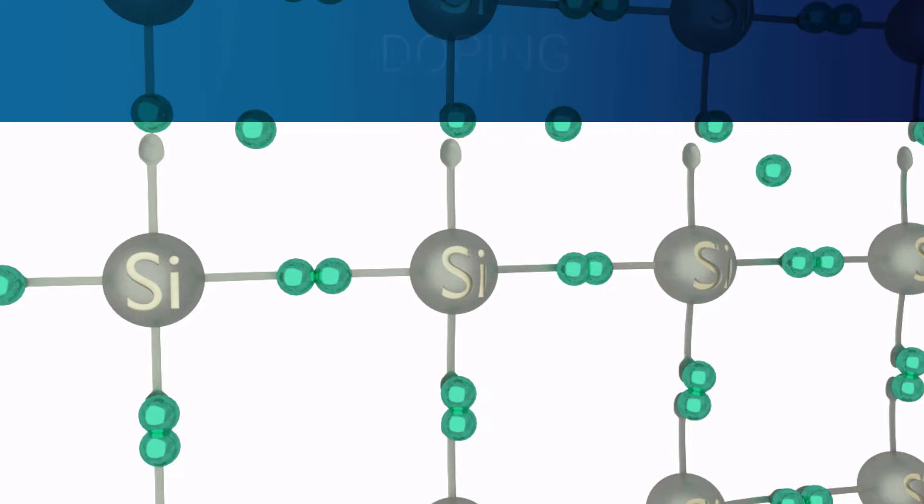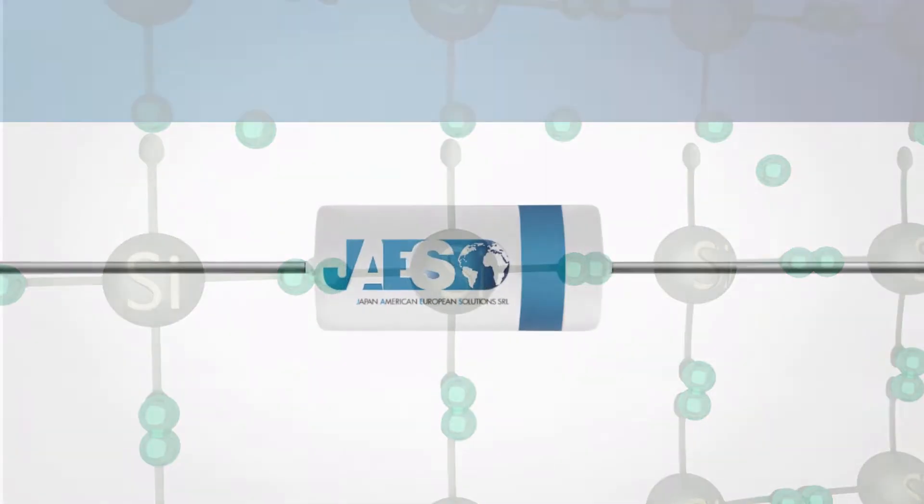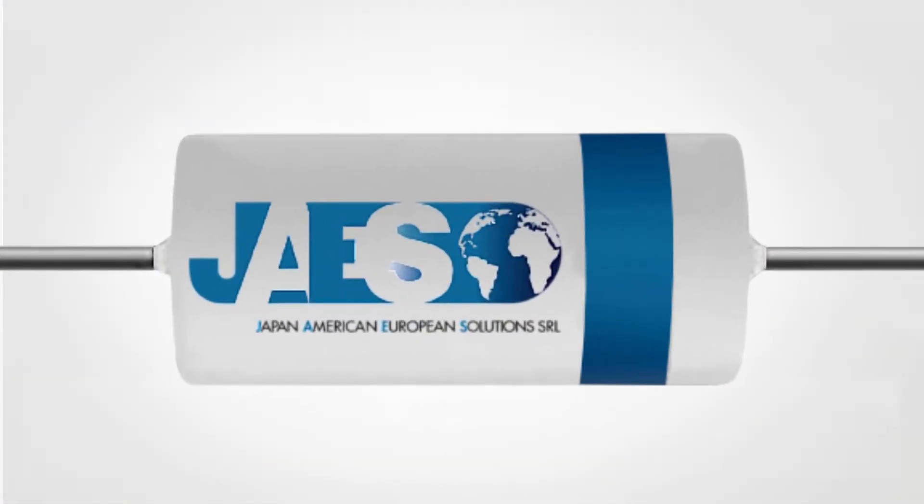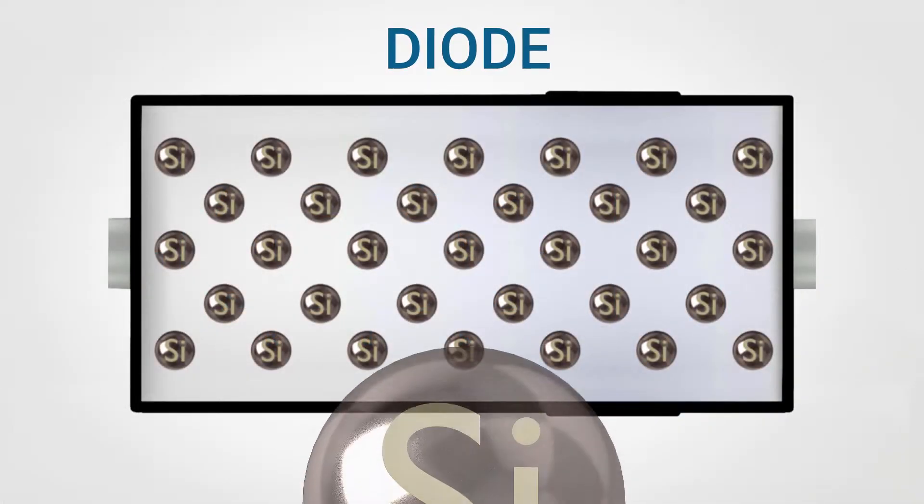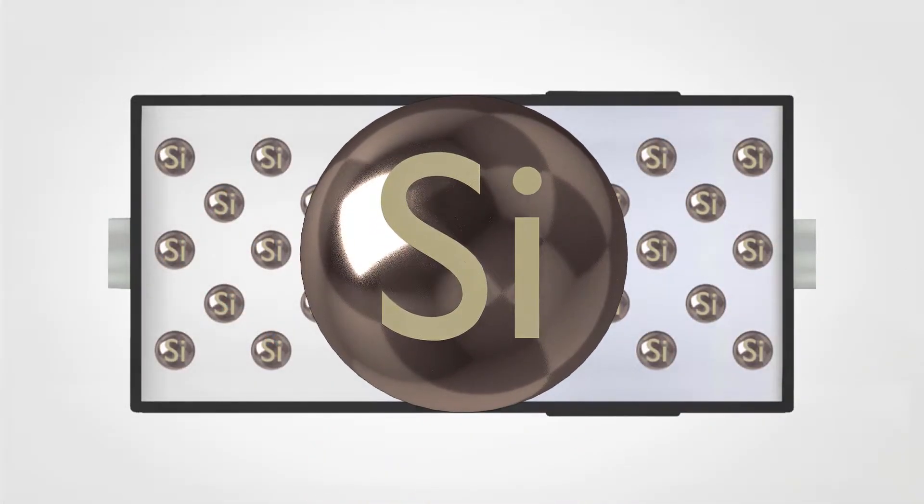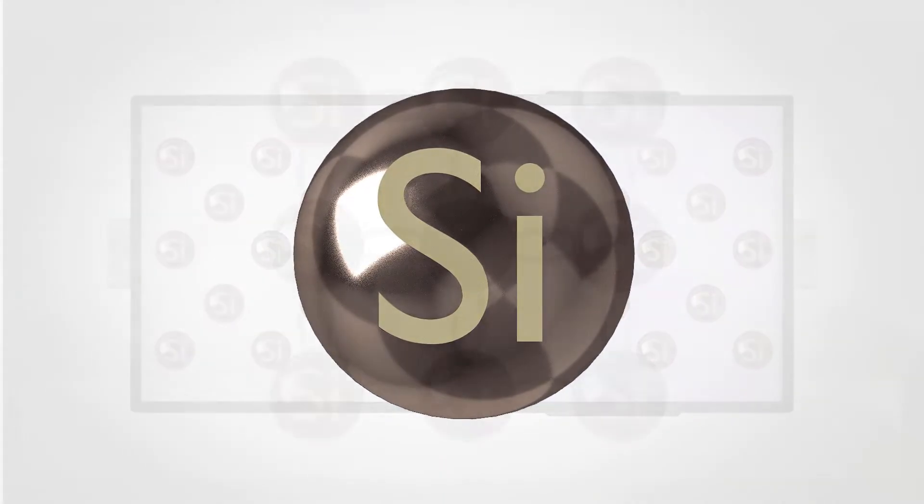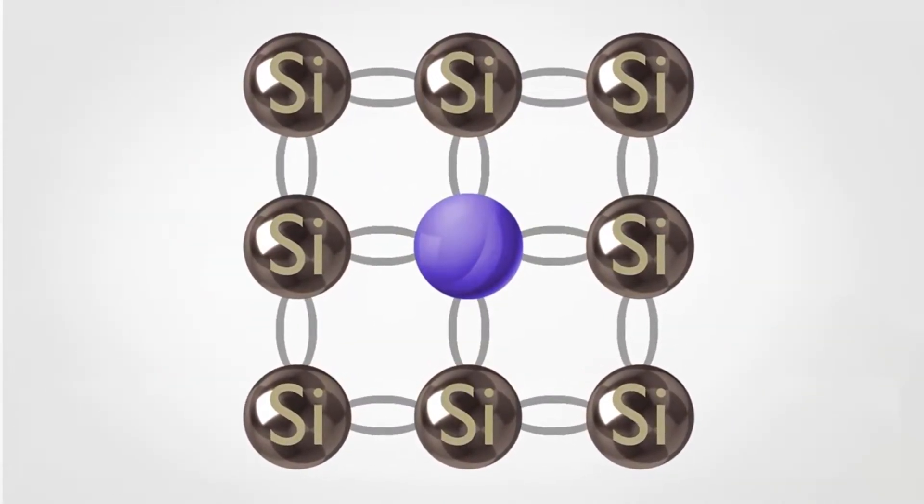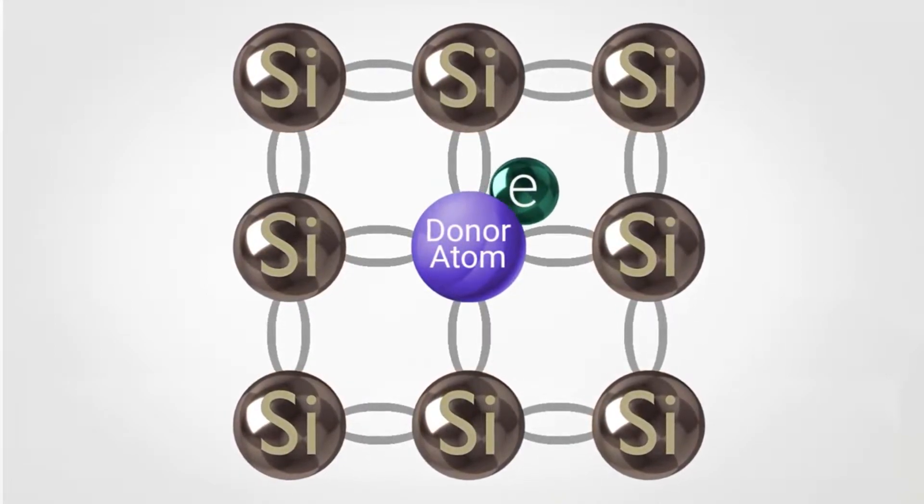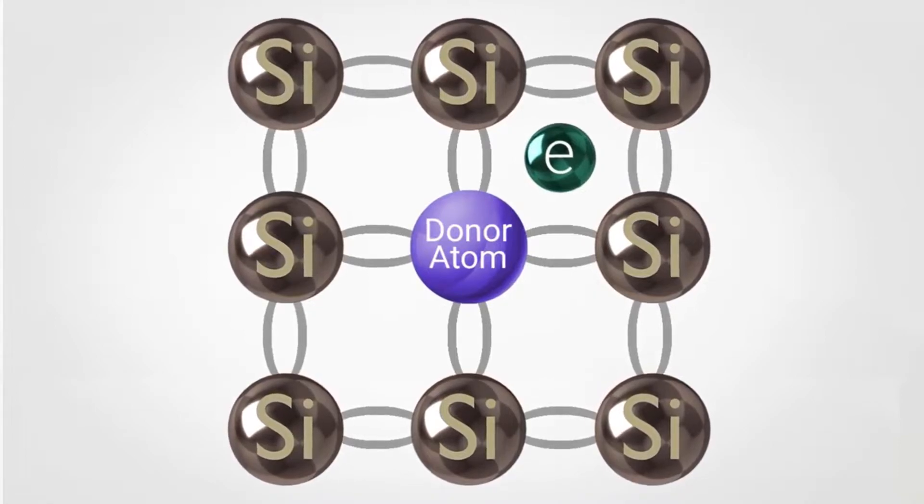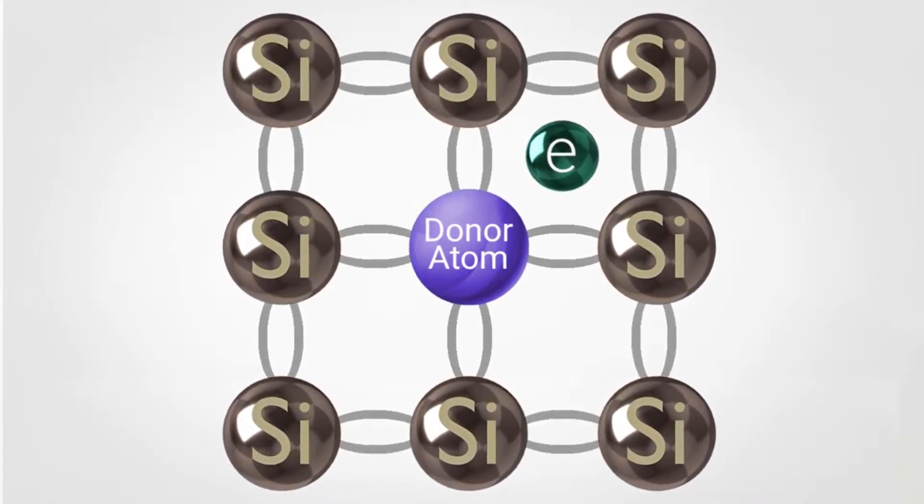We had already heard about this technique in our previous video about the working principles of diodes, when we explained that small amounts of impurity atoms were added to its silicon lattice to modify the electronic properties of silicon. These so-called donor atoms share their own electrons or holes with the silicon lattice and not belonging to any covalent bond.